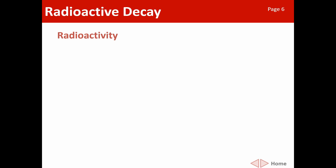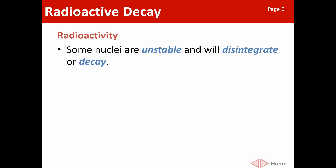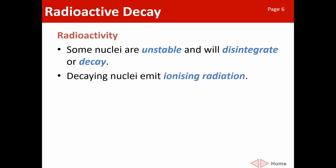Some isotopes are not stable. They tend to disintegrate or decay — in other words, they've got too much energy and the combination of protons and neutrons in the nucleus is not quite balanced. To make itself more stable, the nucleus will tend to split apart and give off extra bits. These extra bits that come off are known as ionizing radiation. Any nucleus that tends to decay we call a radioactive nucleus.